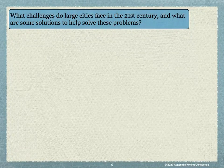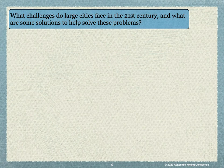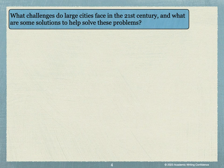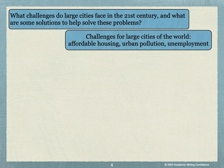Let's take a possible question or topic that you have been asked to write for an assignment: What challenges do large cities face in the 21st century, and what are some solutions to help solve these problems? You might try doing some brainstorming and decide that you want to write about these three: affordable housing, urban pollution, and unemployment.